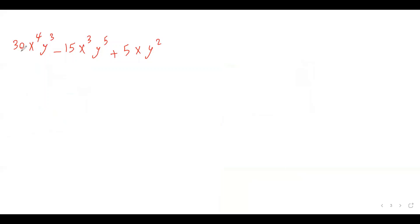Here is the next example: 30x to the power of 4, y cubed, minus 15x cubed, y to the power of 5, plus 5xy squared. I have three terms in this expression. We follow the same pattern — find the greatest common factor. Start with the coefficients: I have 30, 15, and 5. The greatest common factor between these three numbers is 5.